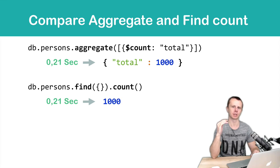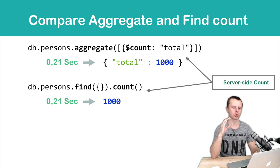There are two conclusions here. First, both operations are performed on the server and the server returns us the result. In the first case it returns an object total 1000, and in the second case it returns a number.